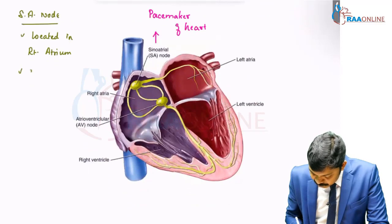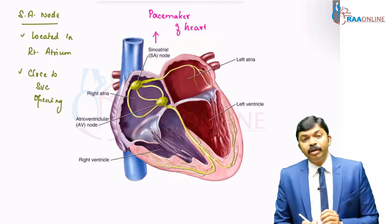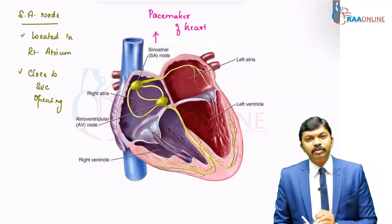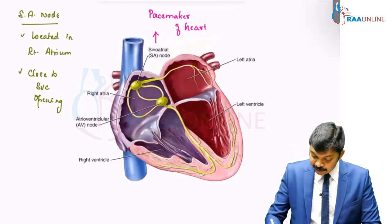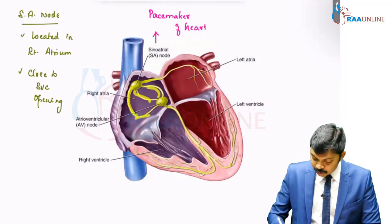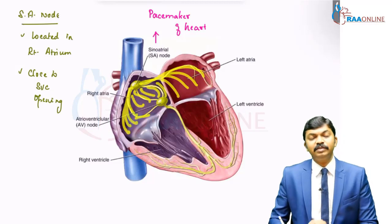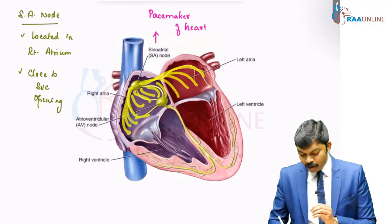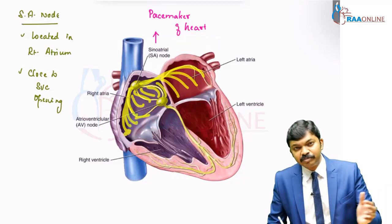The SA node is located very close to the opening of the superior vena cava. That's the sinoatrial node — that's the pacemaker of the heart. Impulses generated in the sinoatrial node spread all throughout the right atrium and all throughout the left atrium as well.